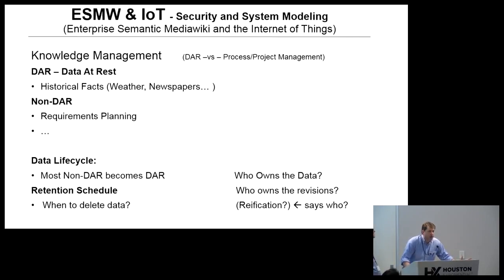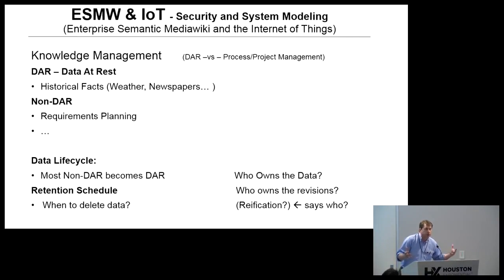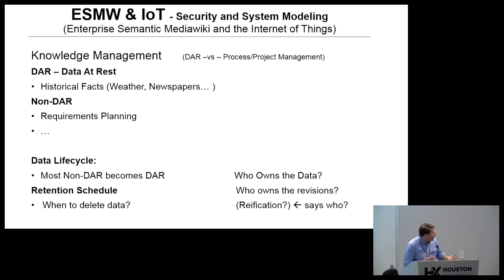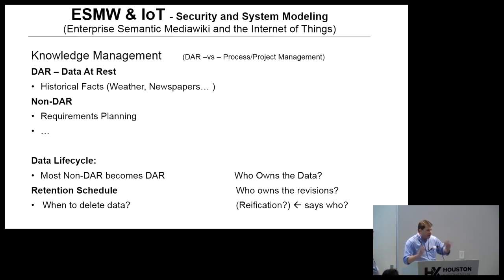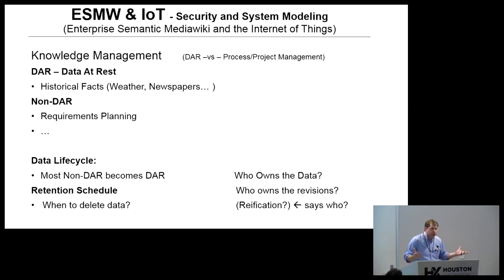When you think of life cycle management for data, most data ultimately becomes what we call 'data at rest' (DAR). But at the same time there's data that's not yet a historical fact - calendar of events, things we hope to have happen. We have all this data that hasn't quite reached the data-at-rest point of its life cycle. We also have to worry about the retention schedule - all this information is accumulating and at what point does it need to be reviewed and discarded?